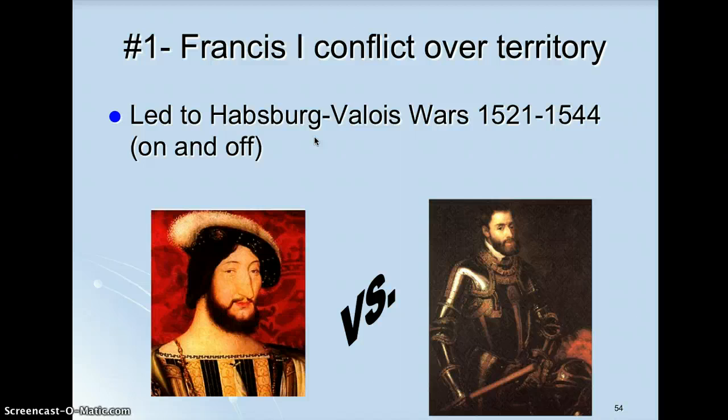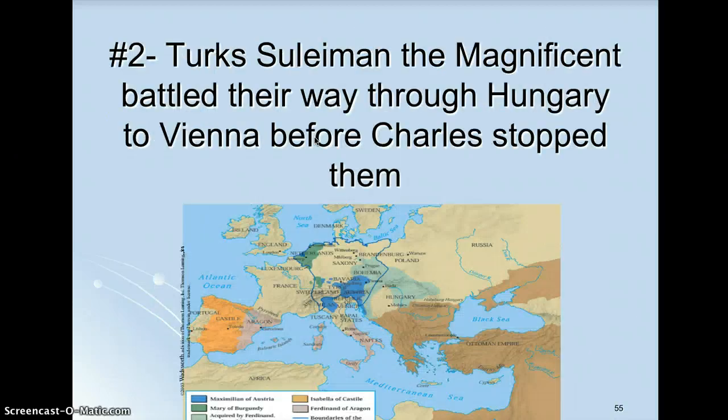When did Luther nail his theses? 1517 — that's really a date you have to stick in your head to give you context later on. So 1517, he nails the theses. The Habsburg-Valois conflicts happen starting 1521.